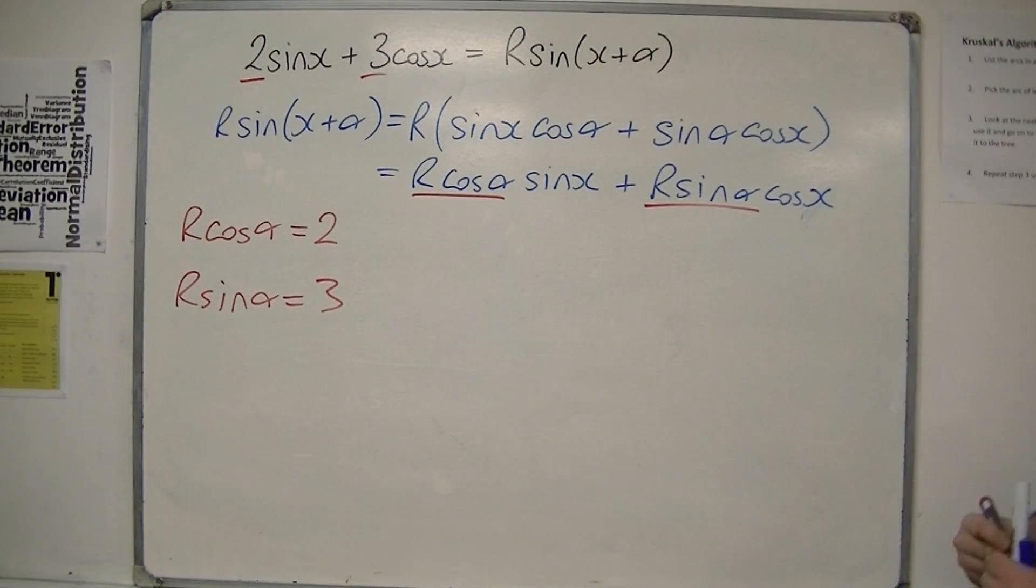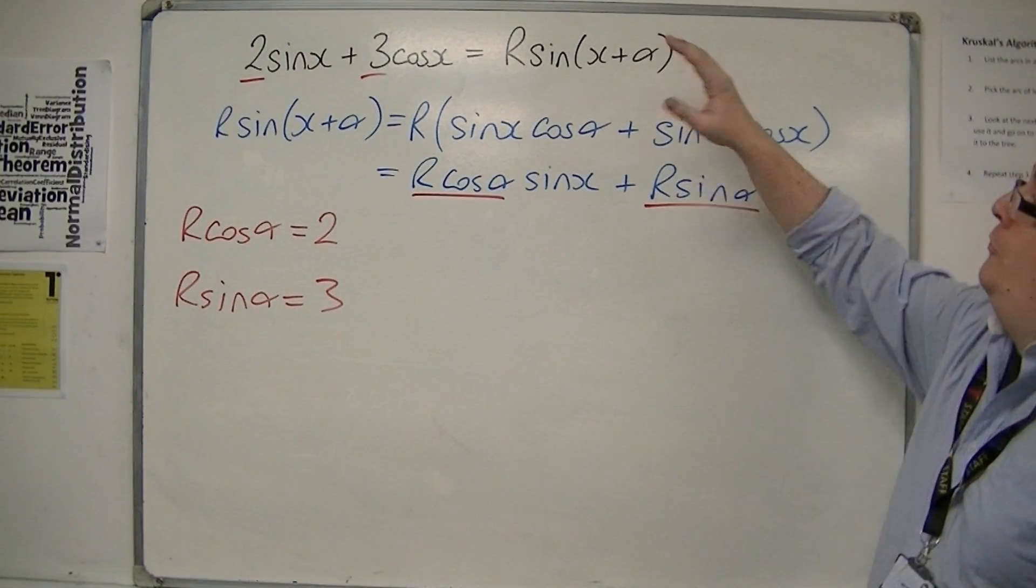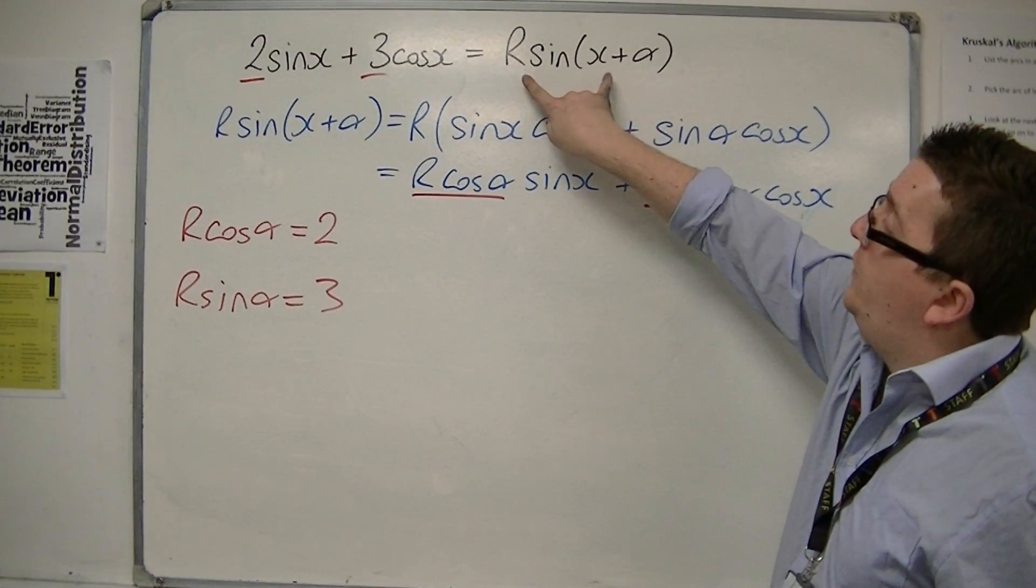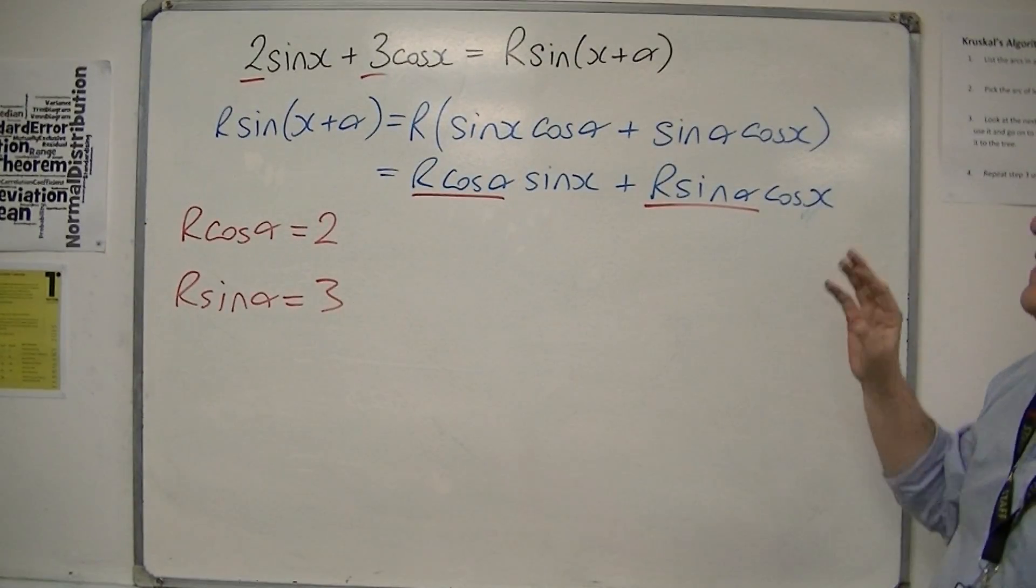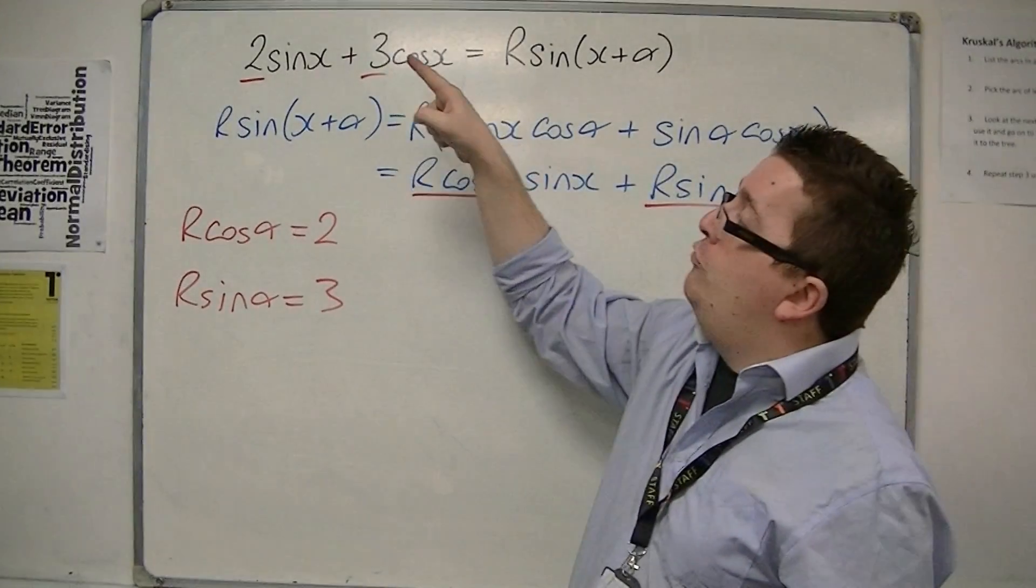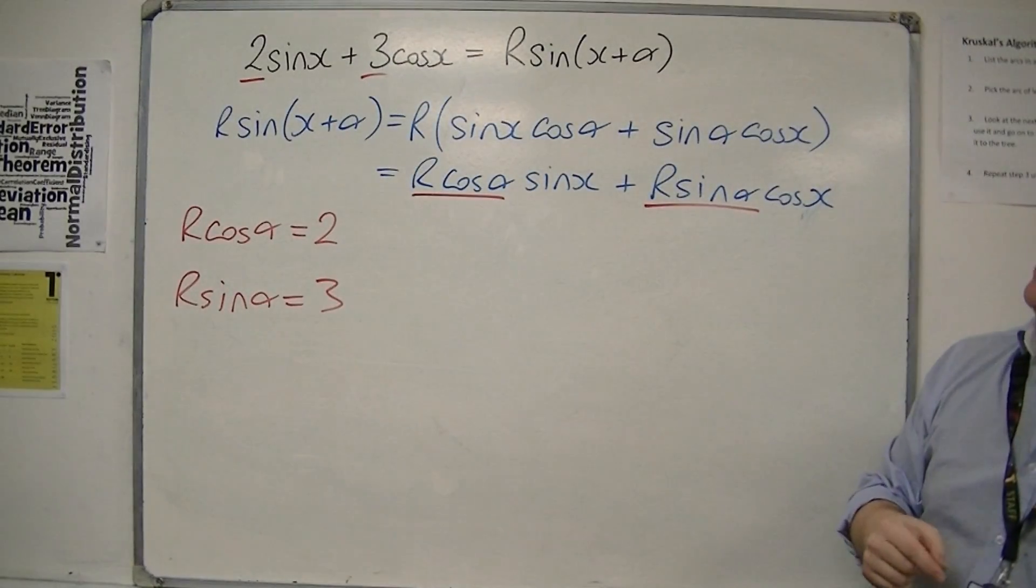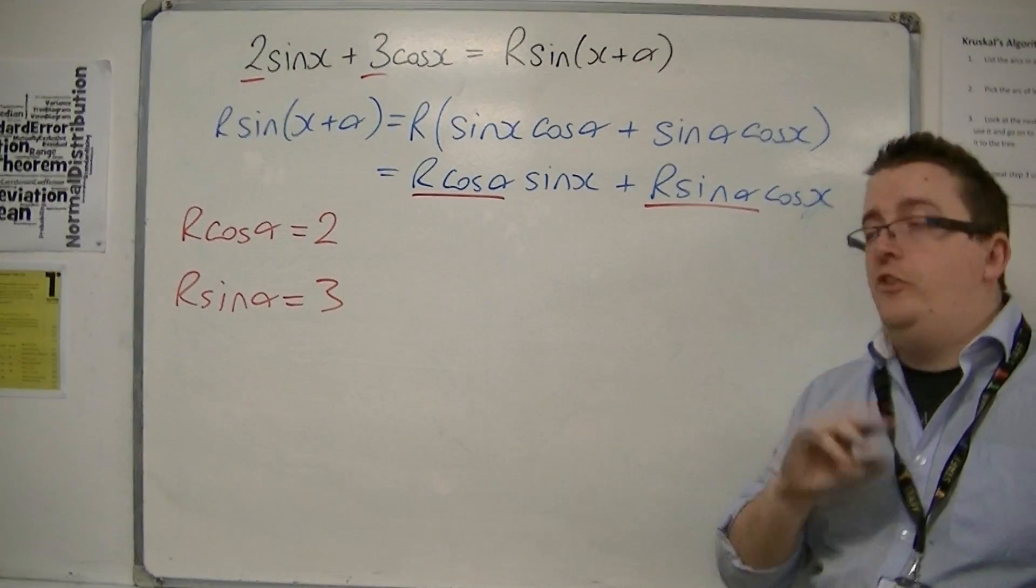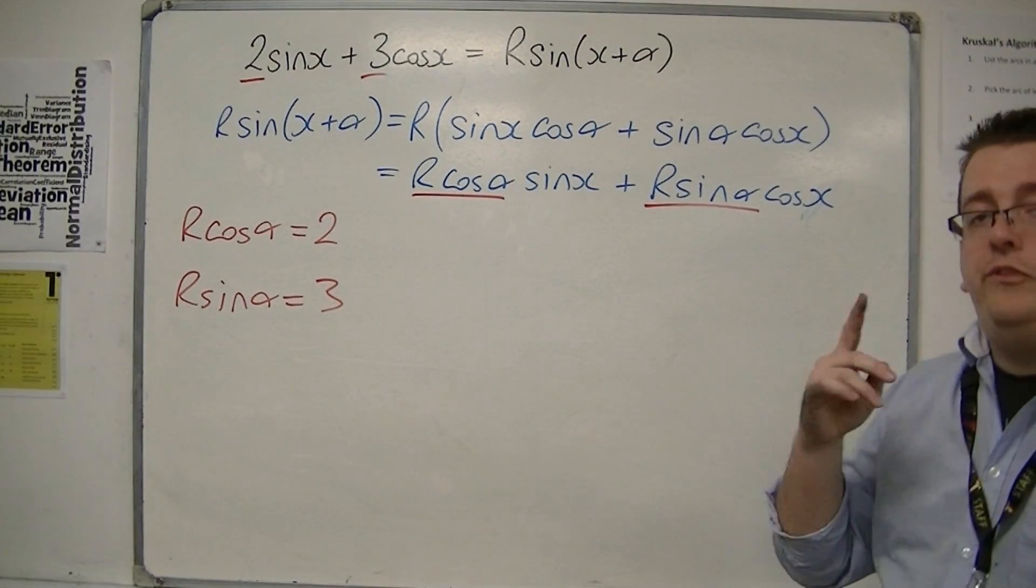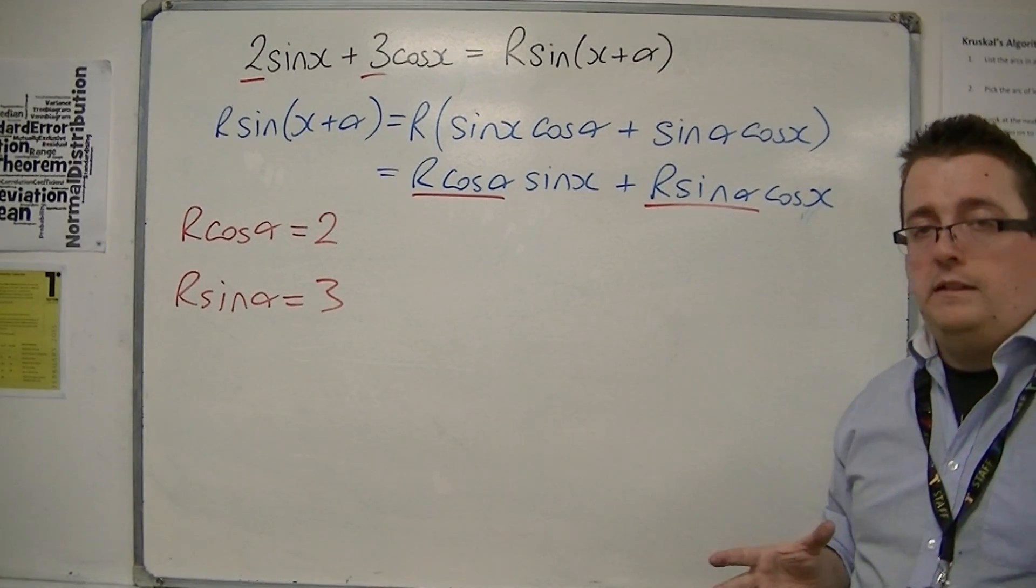So it really relies on you being able to go from this expression to this identity here and being able to compare it with the original expression 2 sin x plus 3 cos x. Now, we have two equations with two unknowns, and we're going to need to use simultaneous equations in order to work out α and r.